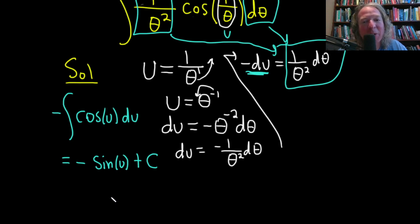And we're not done, right? We have to go back to the original variable, which in this case is actually theta. And we said u is 1 over theta.